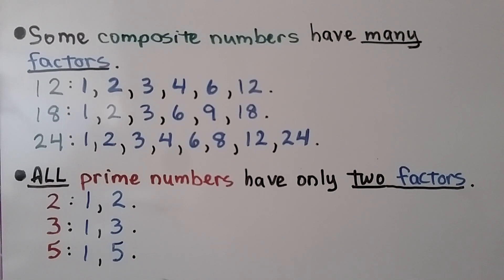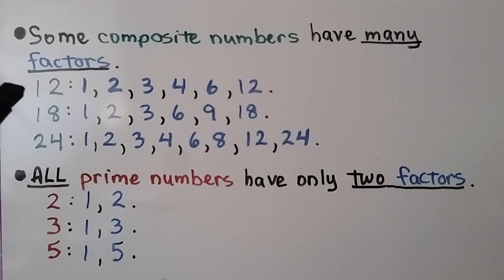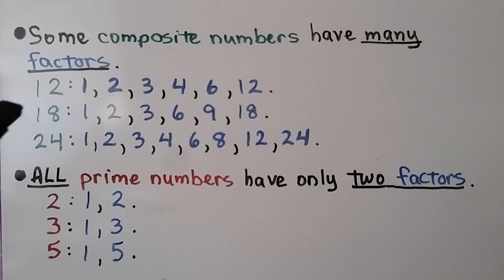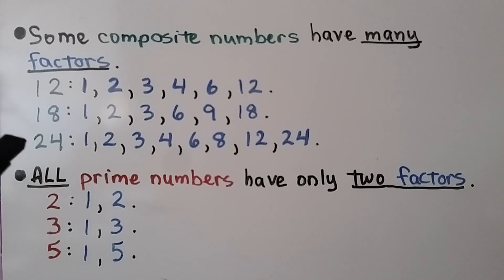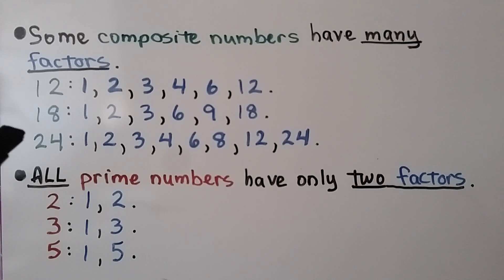Some composite numbers have many factors. 12 has the factors 1, 2, 3, 4, 6, and 12. 18 has 1, 2, 3, 6, 9, and 18. And 24 has many factors: 1, 2, 3, 4, 6, 8, 12, and 24.